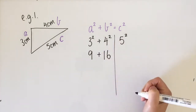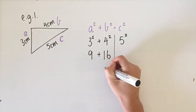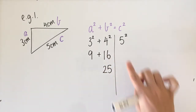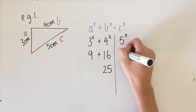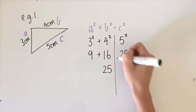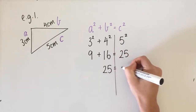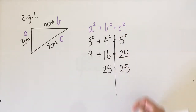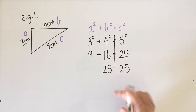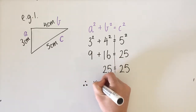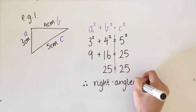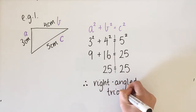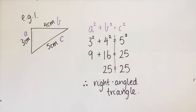4 squared, which is 4 times 4, gives us 16. 9 plus 16 gives us 25. Now looking at the other side: 5 squared, which is 5 times 5, is 25. In this case, we can say that these are equal, which means therefore it is a right-angle triangle because both sides are equal. You could put in your little right-angle symbol, and that would be true.